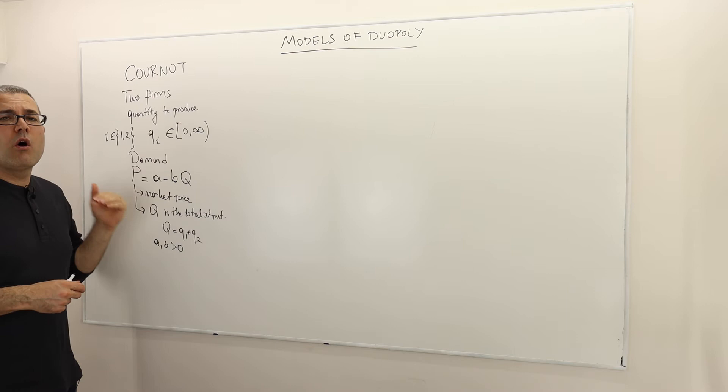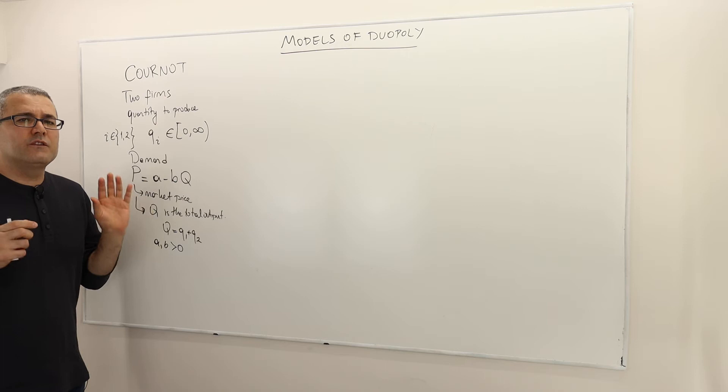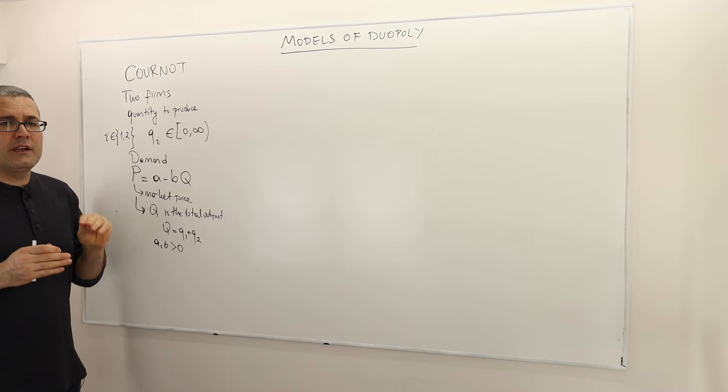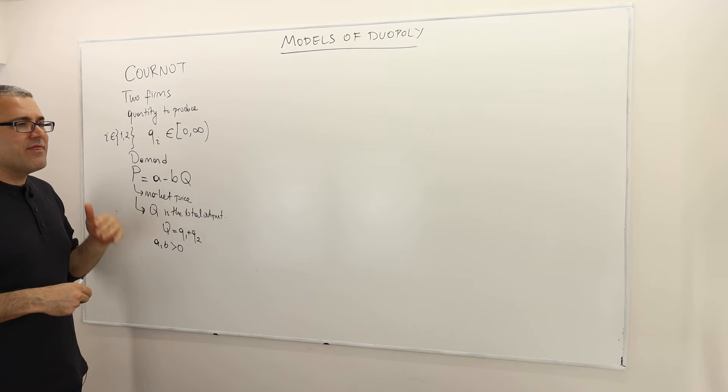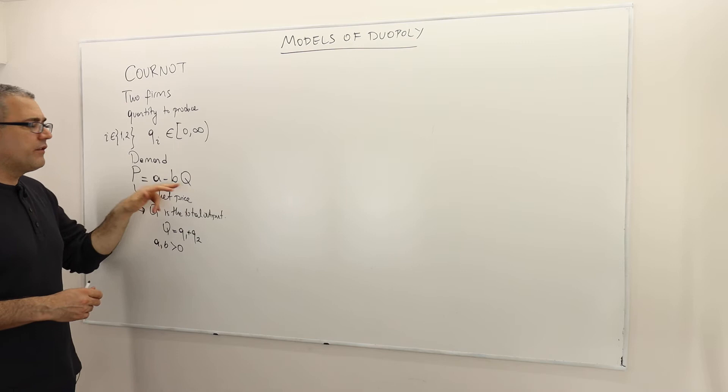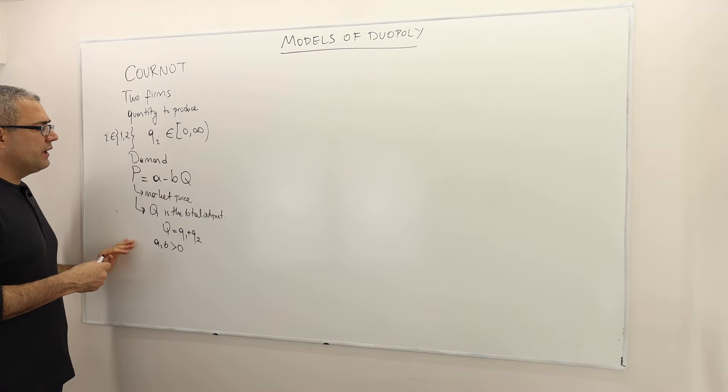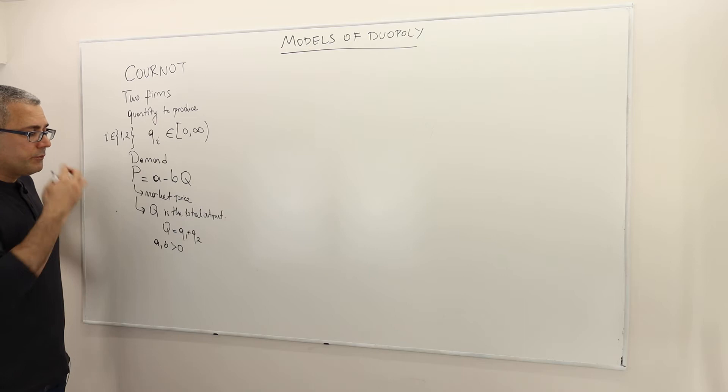The firms take the price as given, as a function of the quantities they selected. This is a simultaneous move game where two firms choose their quantities Q1 and Q2 simultaneously without observing the other firm's choice. That's the end of the game — the price is realized after their quantity choices, and each firm is aiming to maximize its own profit.